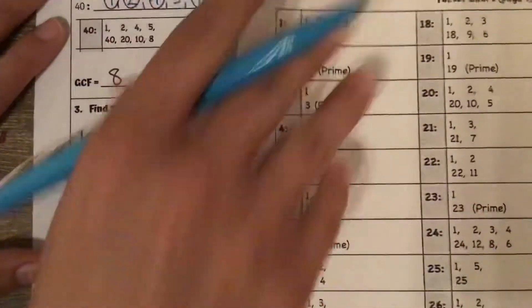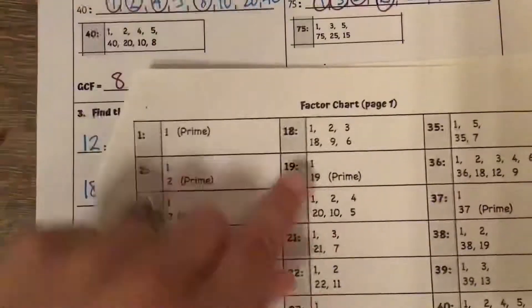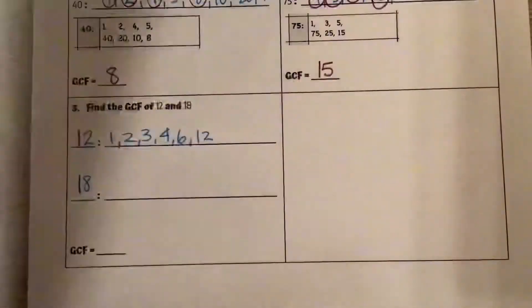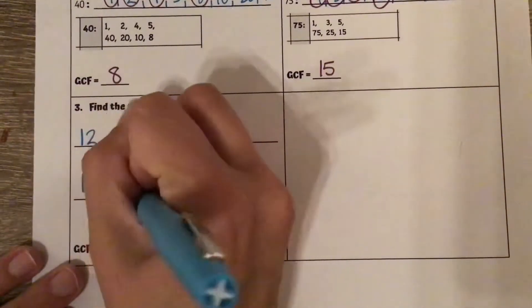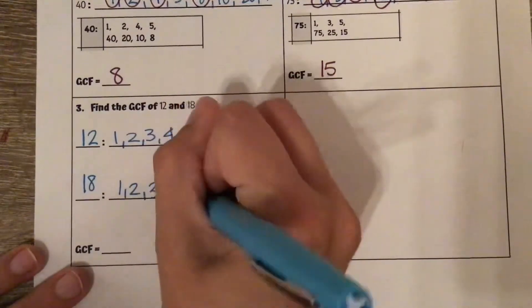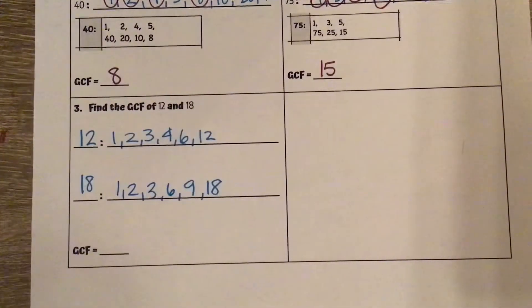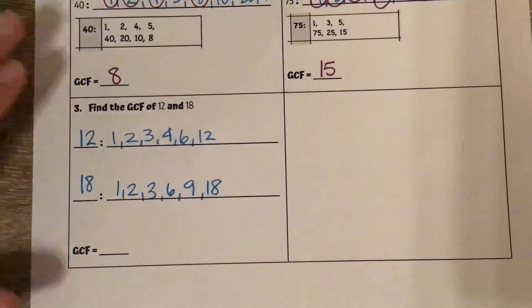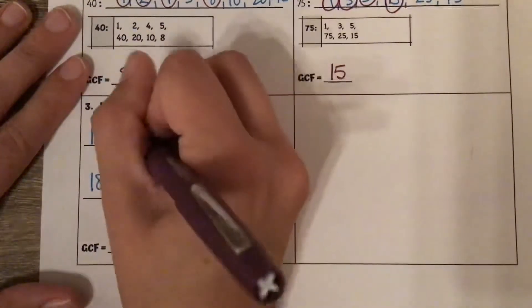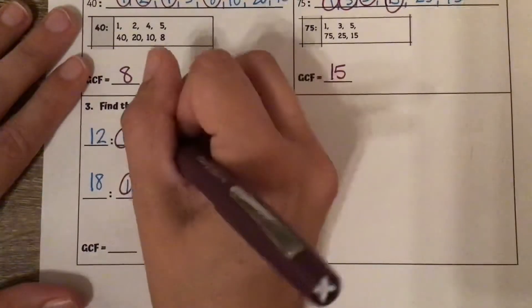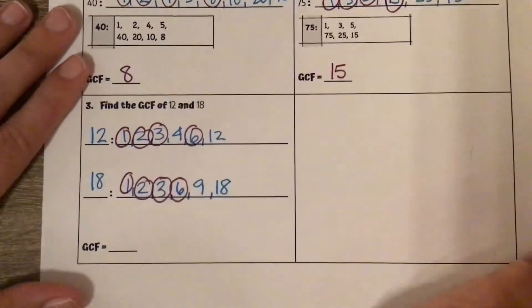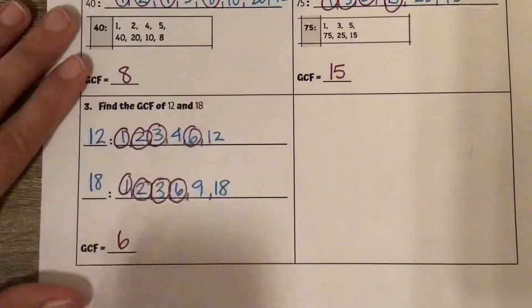And then 18, I need to scroll down a little bit. We've got our factors listed out here: 1, 2, 3, 6, 9, and 18. I'm going to go through, circle those that they share: 1, they share 2, they share 3, not 4, but they share 6, not 12. So the highest number they both share is 6.